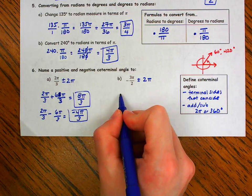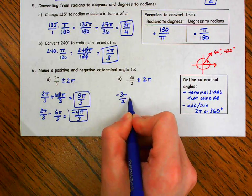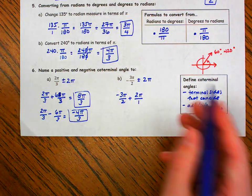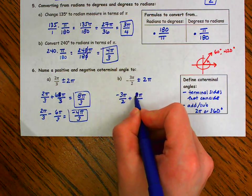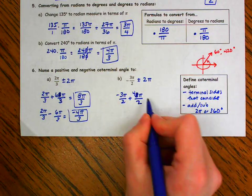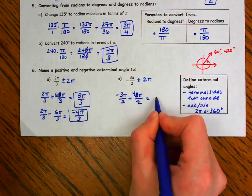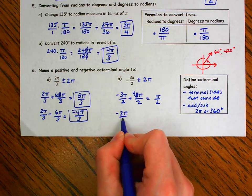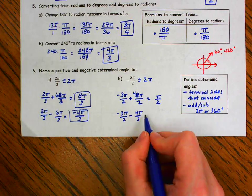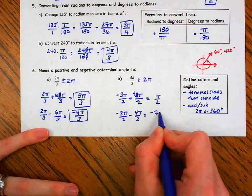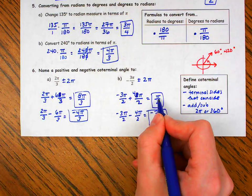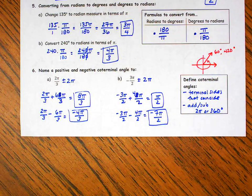Let's do the same thing over here. I'm at negative 3 pi over 2, but I'm going to add 2 pi. I don't have a common denominator, so I'll multiply 2 pi by 2 over 2, giving me 4 pi over 2. Adding gives me pi over 2. Subtracting 4 pi over 2 — which is just 2 pi — gives me negative 7 pi over 2. So those are my two coterminal angles: one positive, one negative. There's the end of our Unit 1 review. Hope you guys found that helpful.